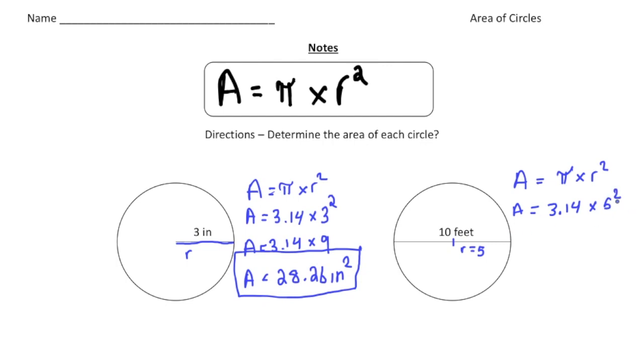And then remember, 5 squared is 5 times 5, right? Not 5 times 2. So 5 squared is 25. So it's going to be 25. So area equals 3.14 times 25. And 3.14 times 25 will give us 78.5 or 1 half.